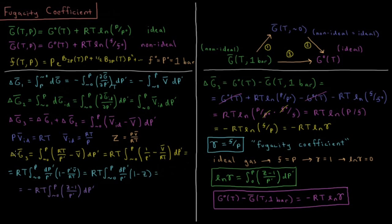The ideal molar volume obeys the ideal gas law PV̄ = RT, so V̄_ideal = RT/P. We also have the compressibility factor Z = PV̄/RT. For an ideal gas Z equals one; for a non-ideal gas it deviates from one in either the positive or negative direction.